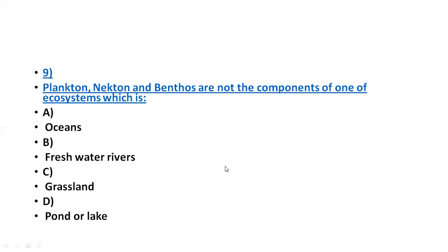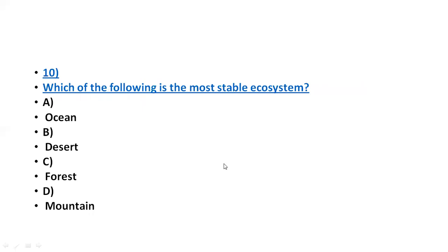Which one of the following is the most stable ecosystem? These questions are from previous year question papers. The most stable ecosystem is the ocean. Ocean is the most stable ecosystem so far.